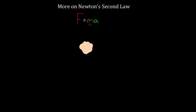Most people know Newton's Second Law as F equals MA, which is a simple way to understand it, and it's fine for simple problems. If I had an asteroid of mass M out in outer space — so there's no air resistance or friction — and there was only one force on it, a force F pointing to the right, let's say 50 Newtons, I could plug in 50 Newtons for the force and 10 kilograms for the mass, and I'd find the acceleration: 50 over 10 gives me five meters per second squared.